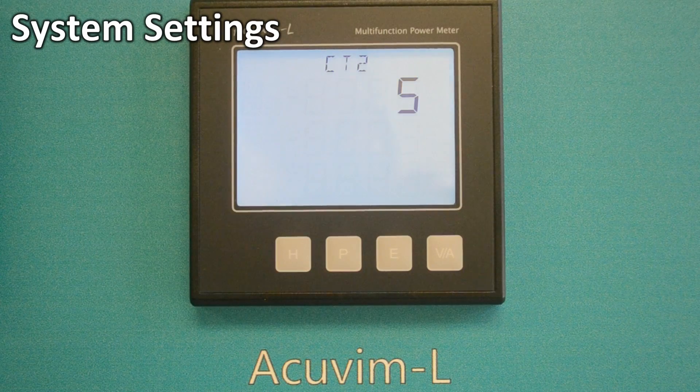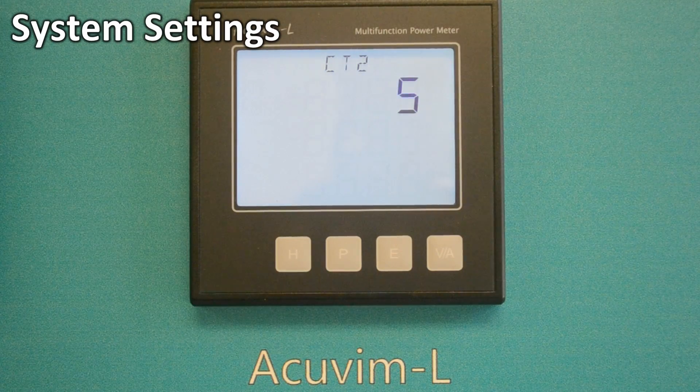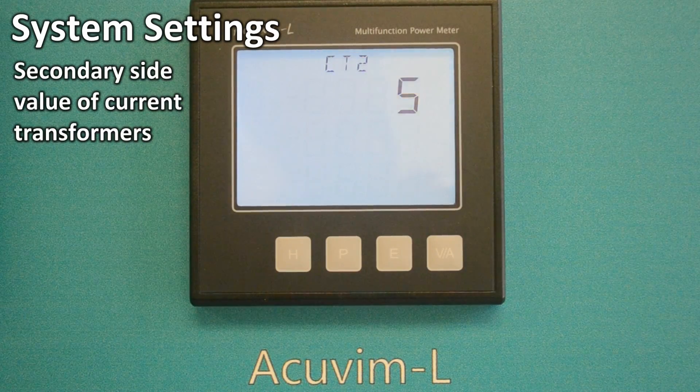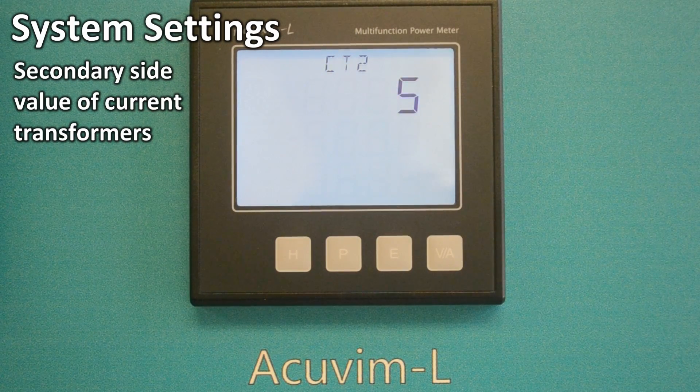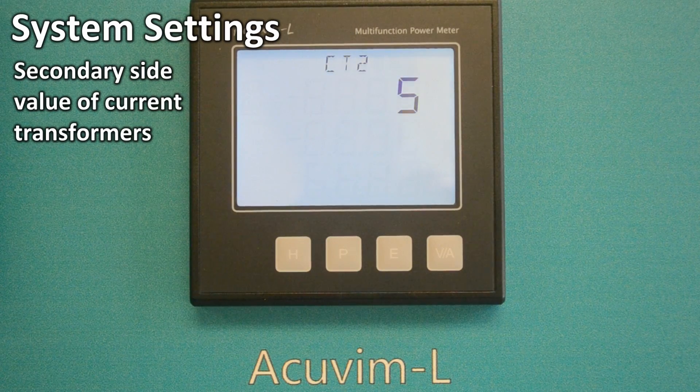CT2 5 amps or 1 amp, depending on the meter model, means the secondary side value of the current transformer. It should be left as the factory 5 amps or 1 amp setting.